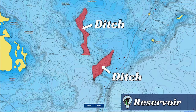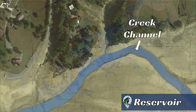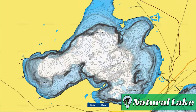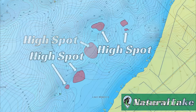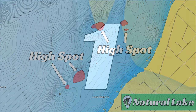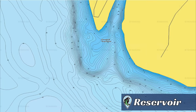Next I want to share the different types of structures we can identify on a contour map that will hold bass. There are different types of structure depending on the type of lake you're fishing. The two major types of lakes are man-made reservoirs and natural lakes. I'm going to show you what each type of structure looks like on both of these lake types. Number one: Points.